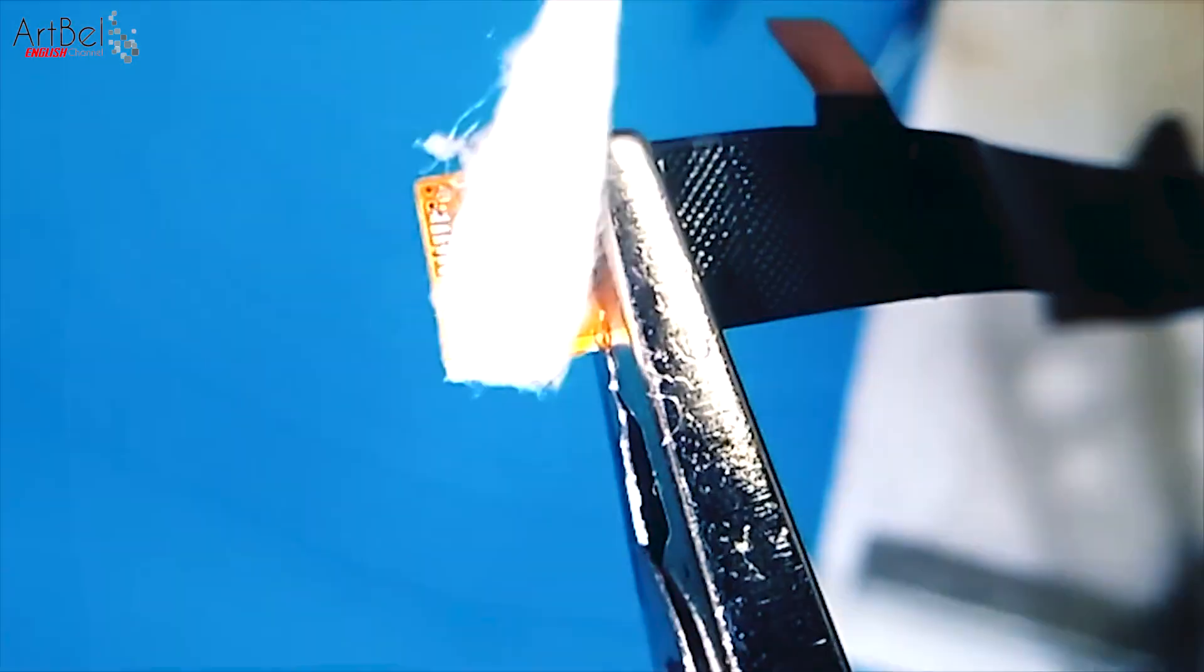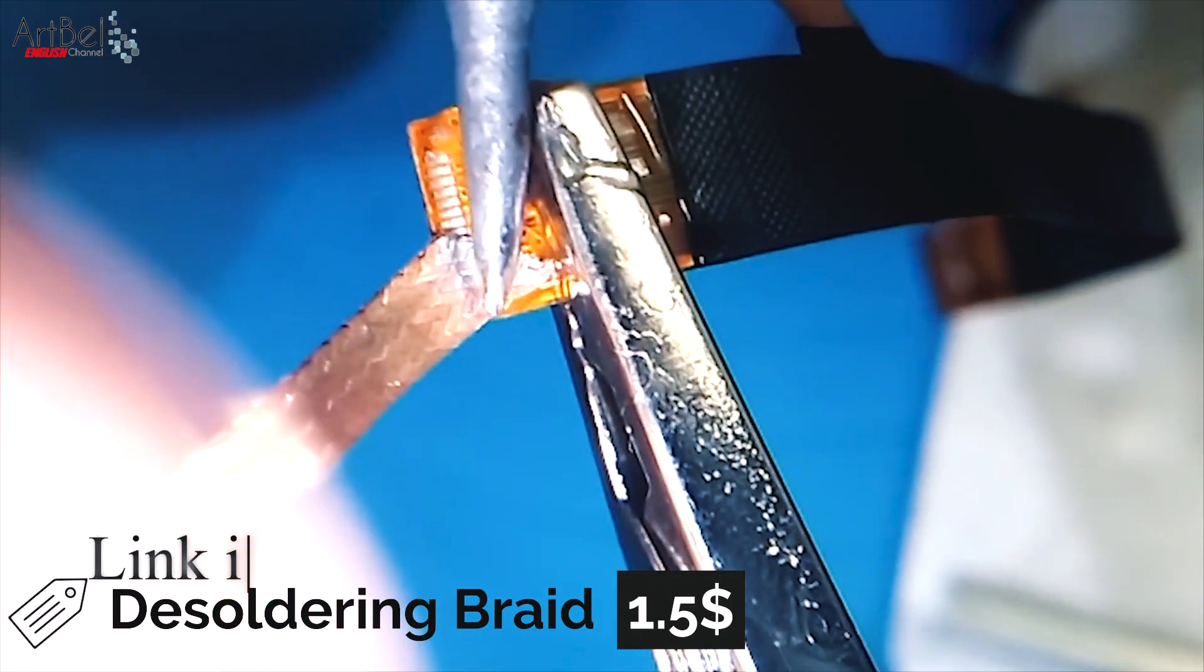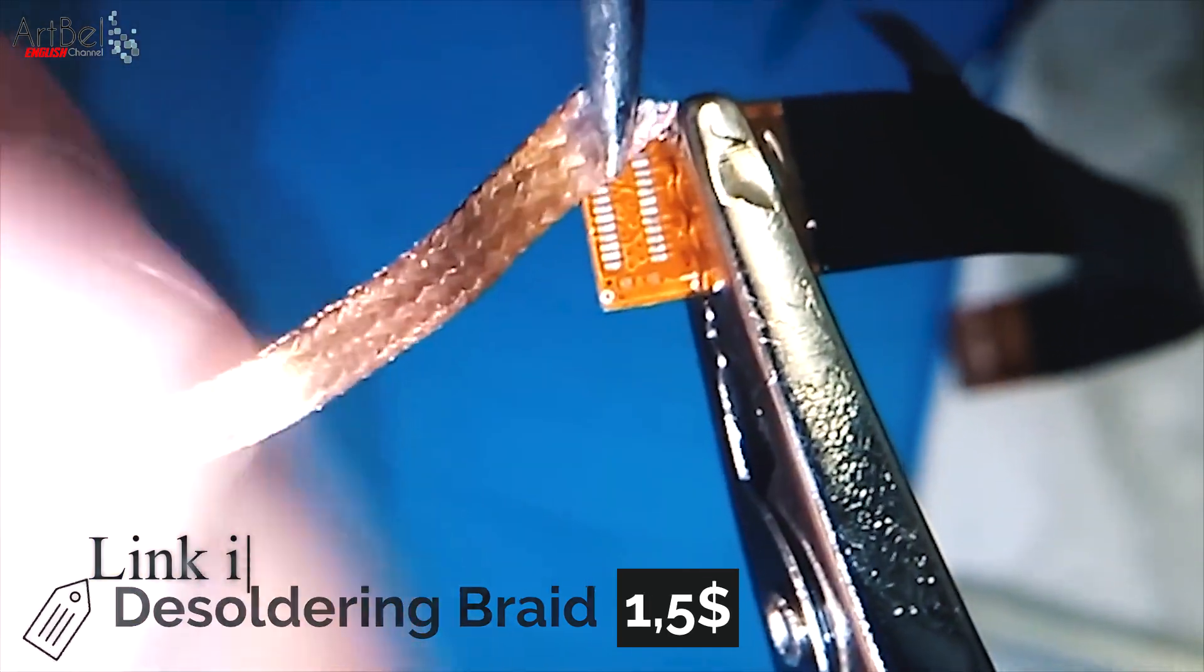After that wipe off the old flux and apply a new one. And with the braid for the soldering and a soldering iron, remove all the old lead-free solder.